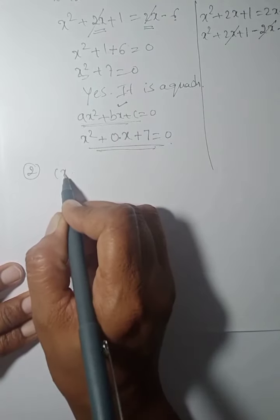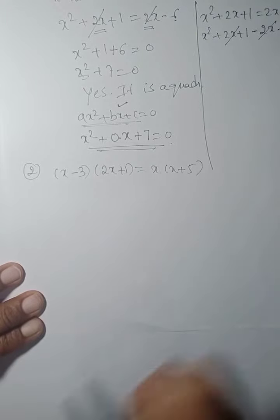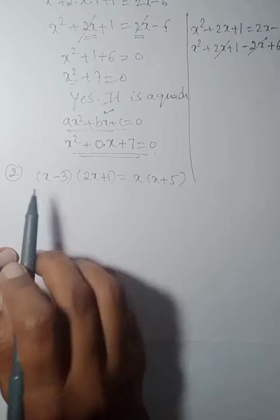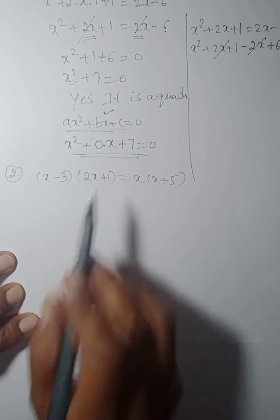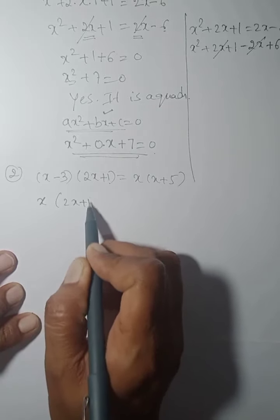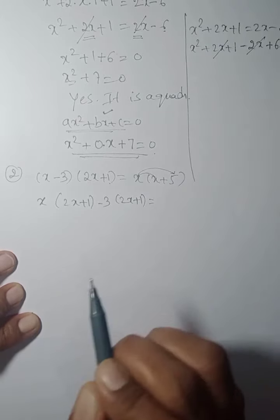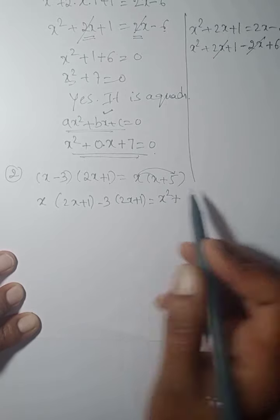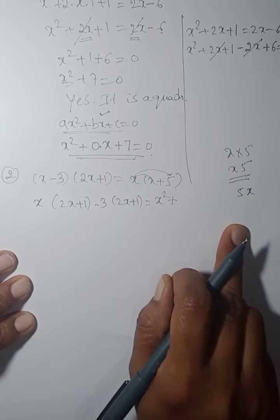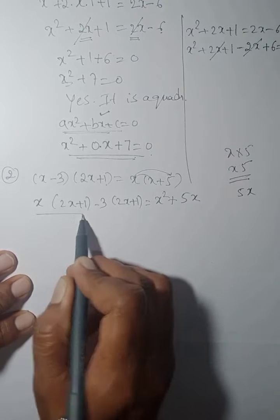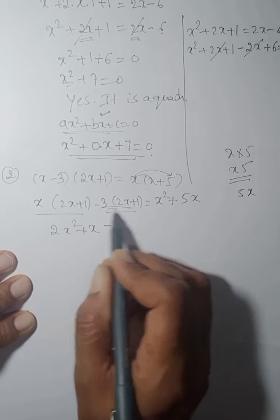I'm explaining the basics slowly and simply. The next equation is of the form (x-3)(2x+1) = x(x+5). To multiply the brackets: x multiplied by (2x+1) gives 2x² + x, and -3 multiplied by (2x+1) gives -6x - 3. On the right side, x into x is x², and x into 5 is 5x.